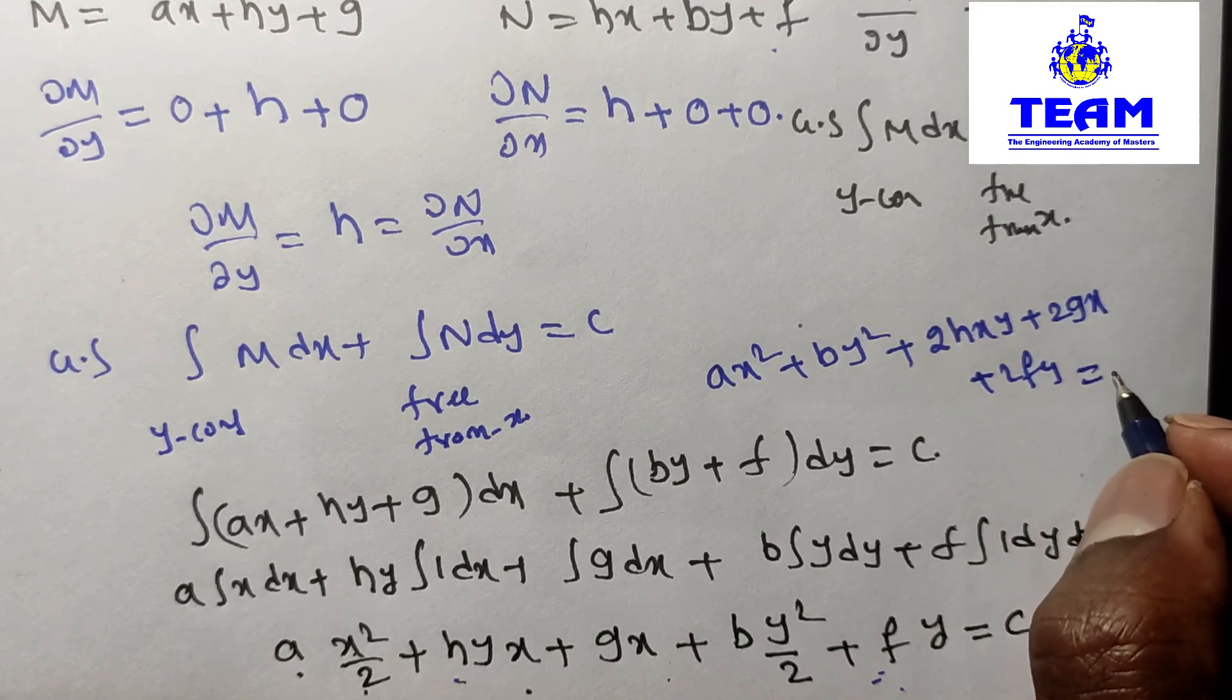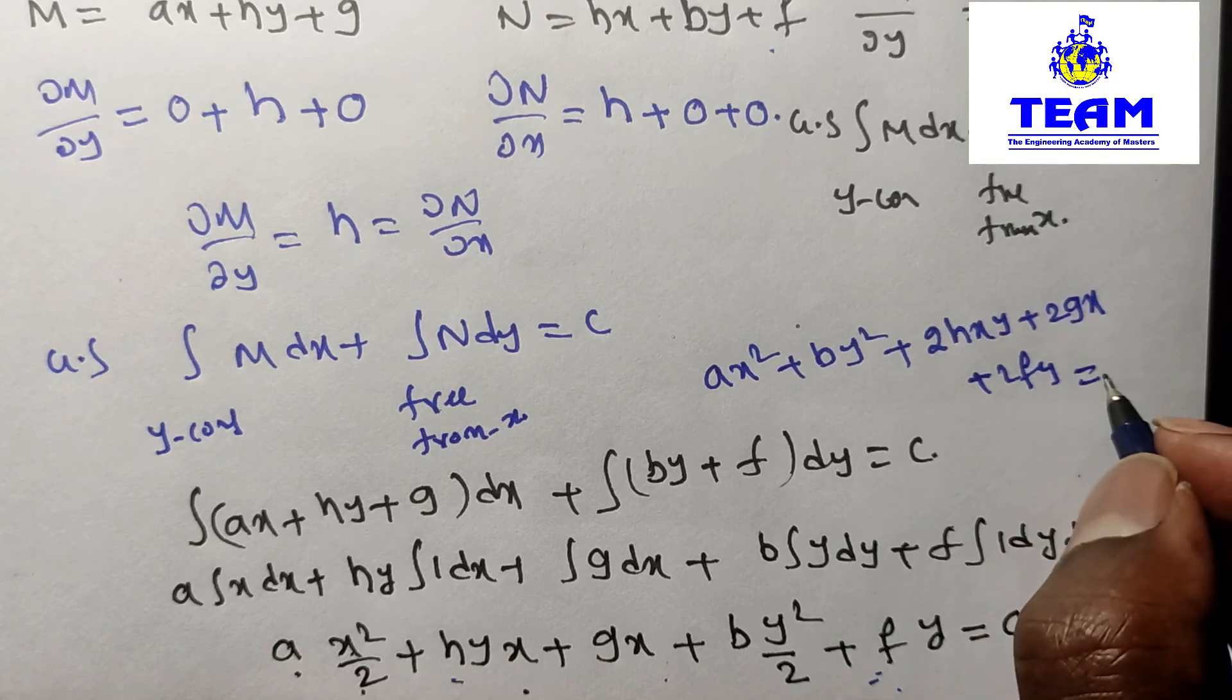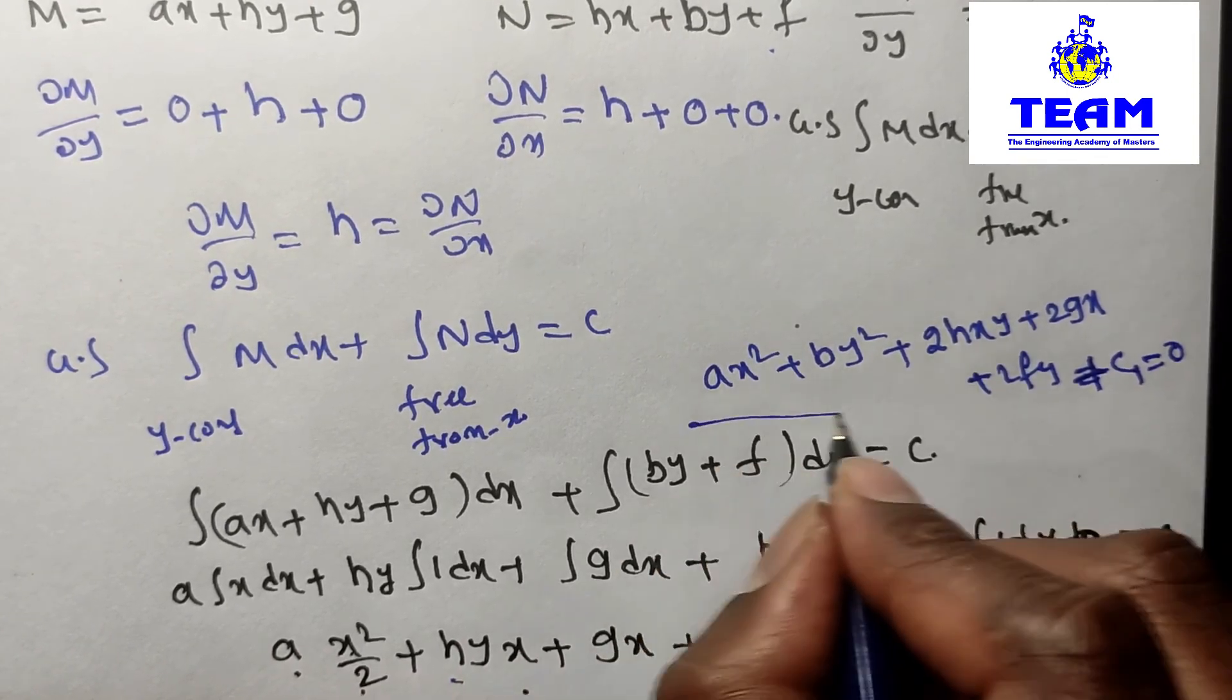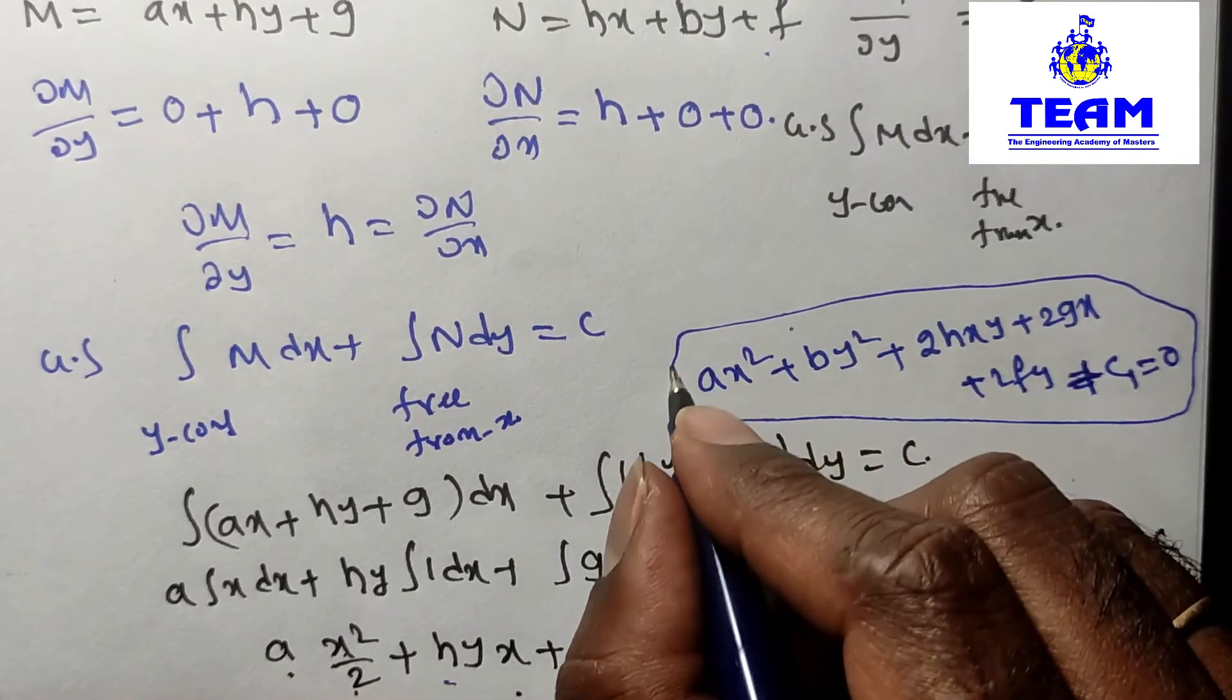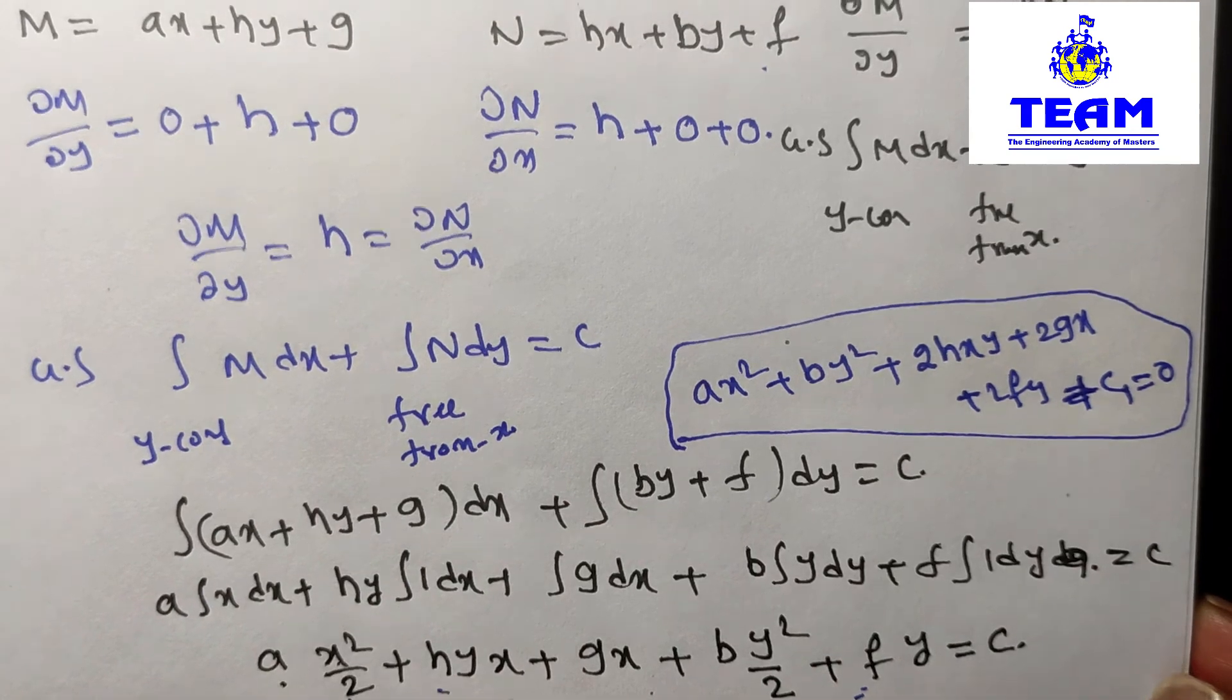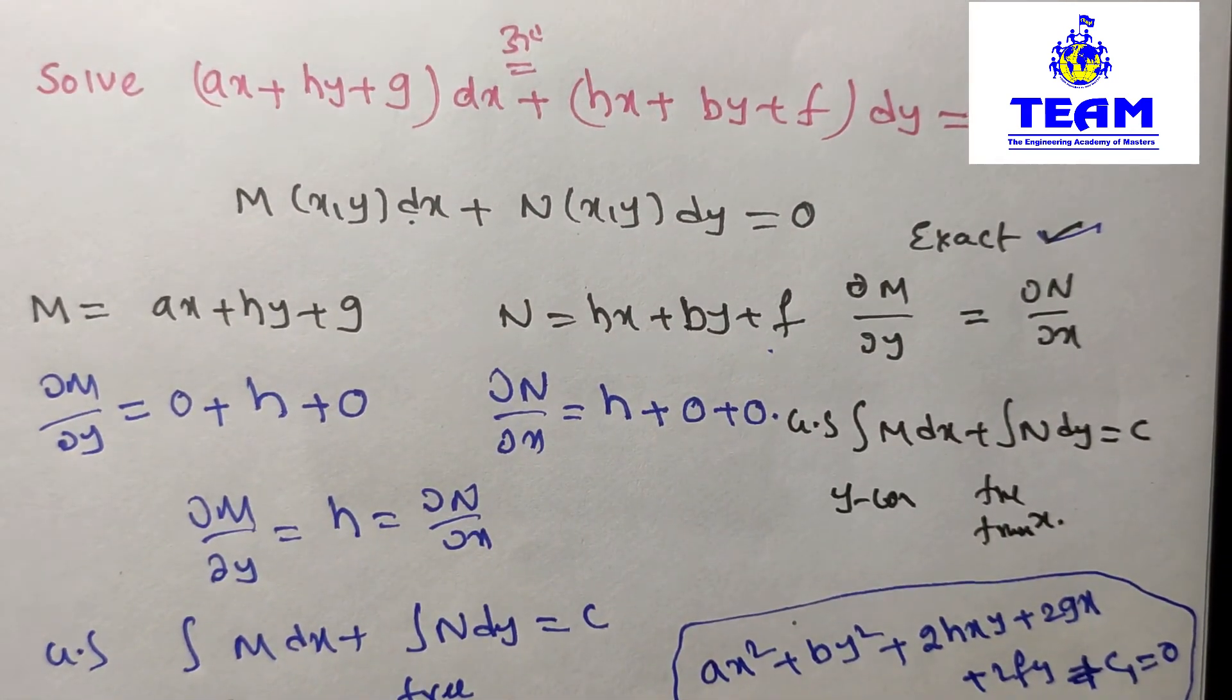Actually this C you can write C₁, or else you can write C on the right side or left side plus C₁ equals 0. So this is the solution, the general solution for the given differential equation. Like this we have to solve exact differential equations. Is it clear?